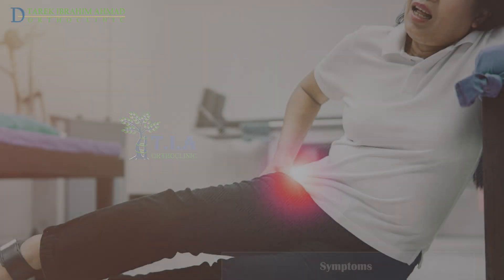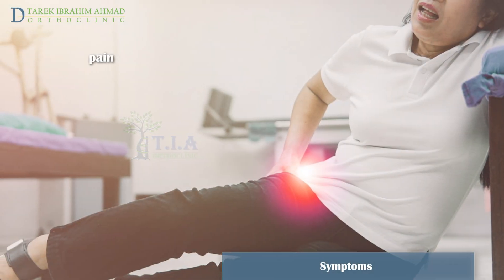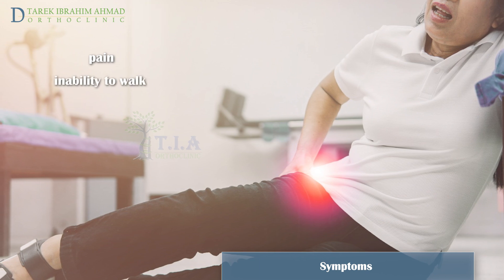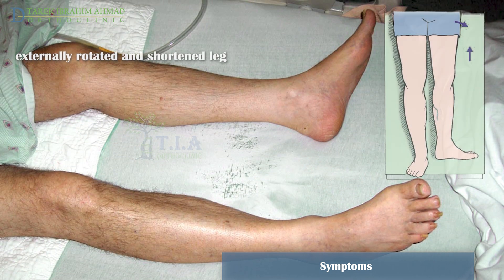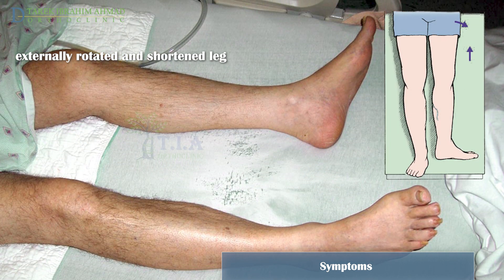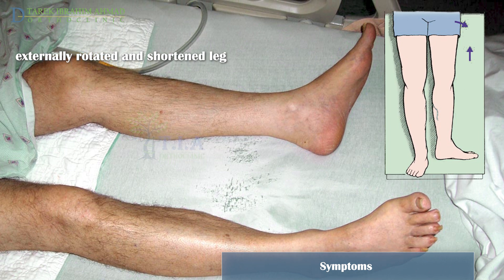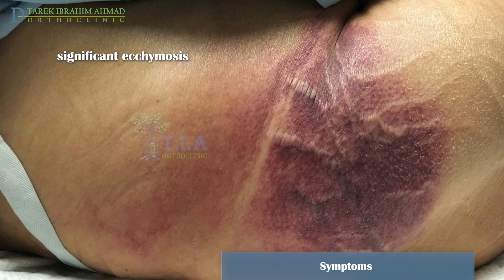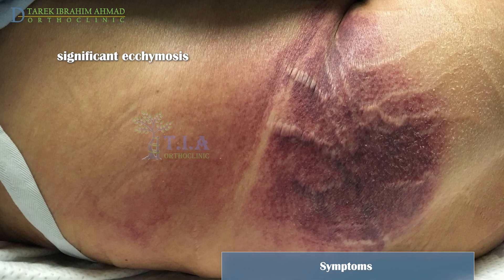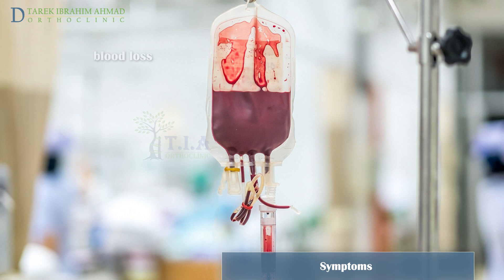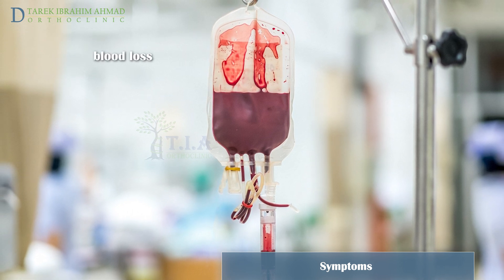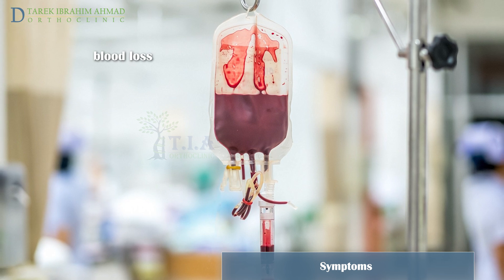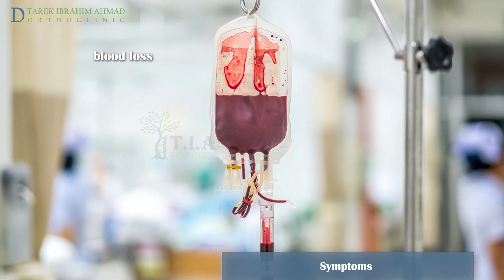Symptoms include the sudden onset of hip pain, either before or following a fall, and the inability to walk. The injured leg may be shortened and externally rotated if the fracture is displaced. Intertrochanteric fractures are extracapsular and significant ecchymosis may be present. Depending upon the time elapsed since the injury, a large amount of blood can be lost into the thigh and hemodynamic status should be closely monitored.